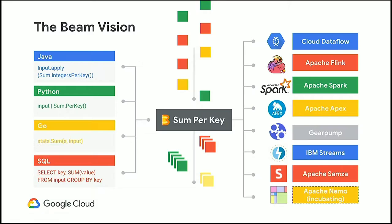In addition to language portability, the other part of the Beam vision is the ability to run in different environments. Imagine you wrote a pipeline and ran it in Google Cloud on Cloud Dataflow today, then decided you want to run it close to your data in an on-premises environment using a Flink cluster. There are a variety of runners being developed right now — Flink and Cloud Dataflow are the closest to production-ready. Apache Samza is another one close to being used in serious environments, and work is being done on the Spark runner as well.